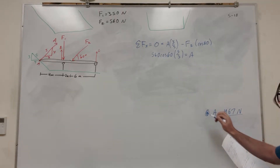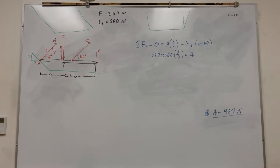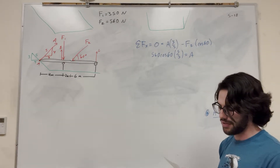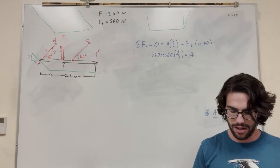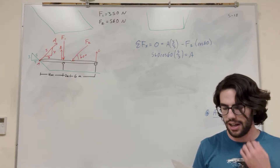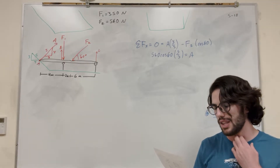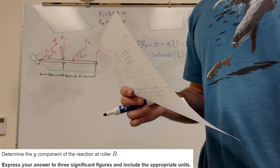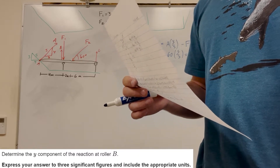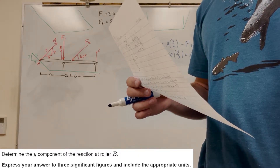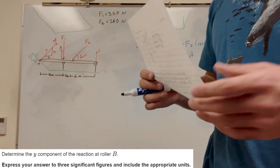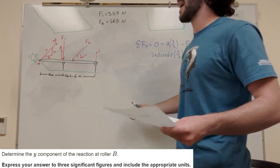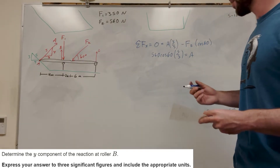That's A — nice, so that's part A, pretty easy. What is part B asking for? It's asking for the Y component of the reaction at B. Well, B only has a Y component — like we said, B only acts in the Y direction. So its magnitude is going to be the same as the Y component.